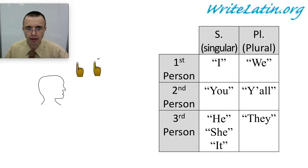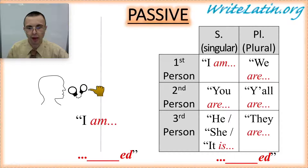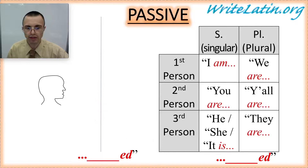The forward-looking head means forward-looking or prospective into the future. The backward-looking head is backward-looking or retrospective into the past. The passive forms we know now are: I am blanked, you are blanked, he/she/it is blanked, we are blanked, y'all are blanked, and they are blanked.